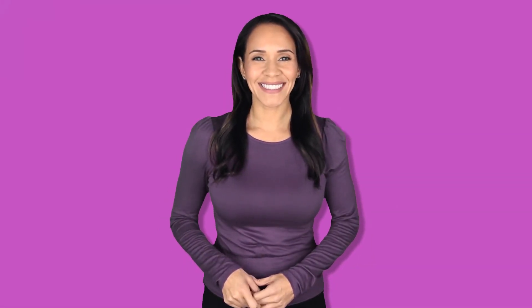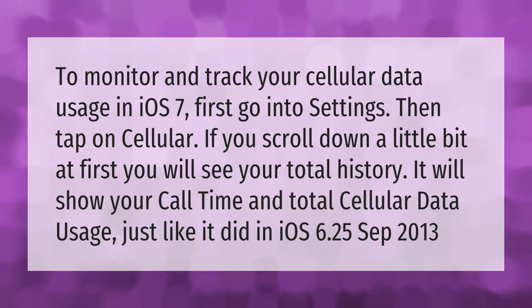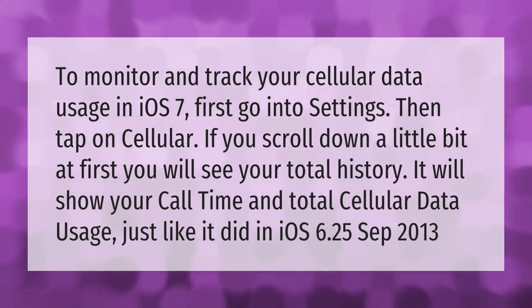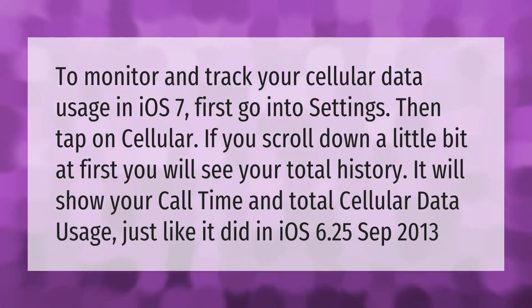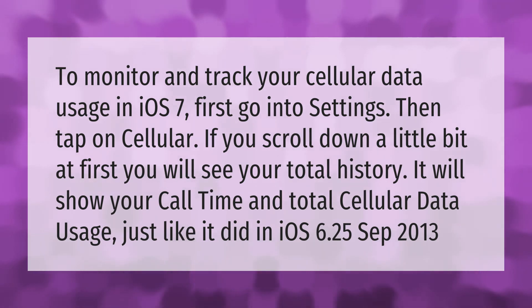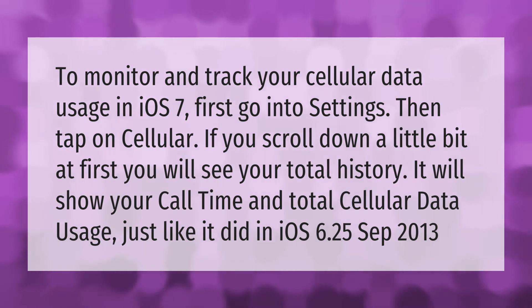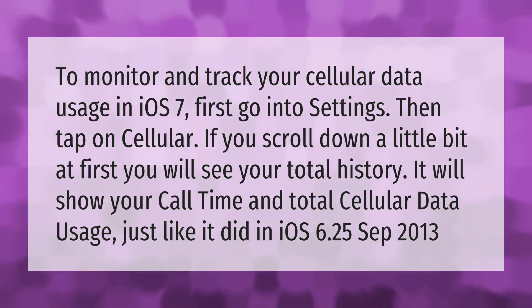To monitor and track your cellular data usage in iOS 7, first go into Settings, then tap on Cellular. If you scroll down a little bit, you will see your total history. It will show your call time and total cellular data usage, just like it did in iOS 6.